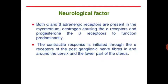Neurological factors: both alpha and beta adrenergic receptors are present in the myometrium. Estrogen causes alpha receptors and progesterone causes beta receptors to function predominantly. The contractile response is initiated through alpha receptors of post-ganglionic nerve fibers around the cervix and the lower part of the uterus.